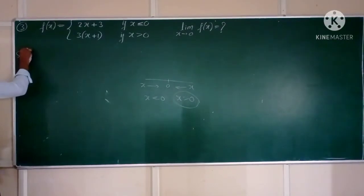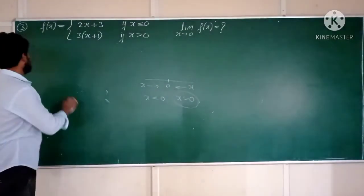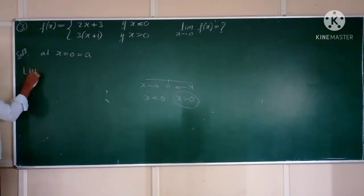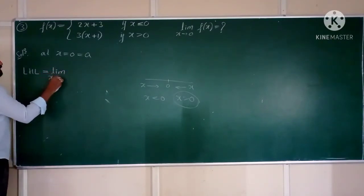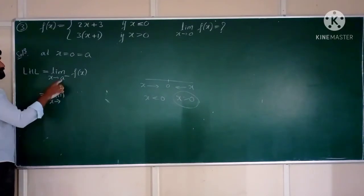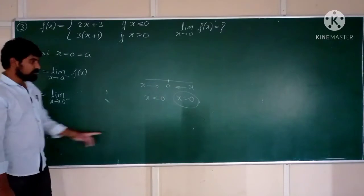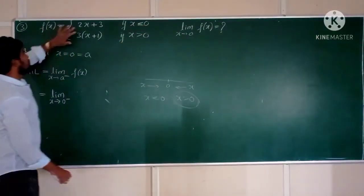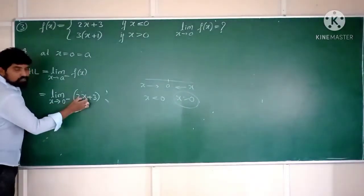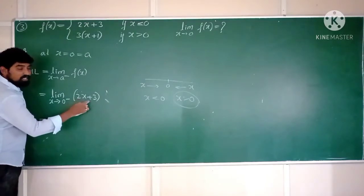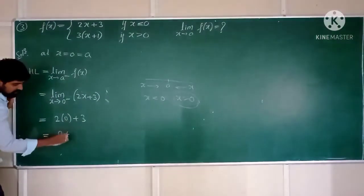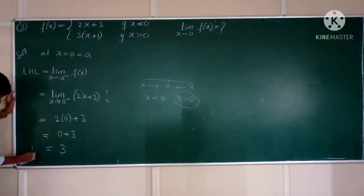We are finding the limit at x = 0, so A = 0. The definition of LHL is limit x tends to 0 minus. Zero minus means x is less than 0, so F(x) = 2x+3. Substituting x = 0: 2(0)+3 = 0+3 = 3. Hence, the value of left-hand limit is 3.